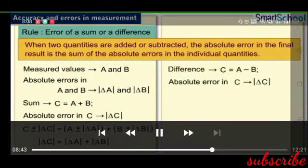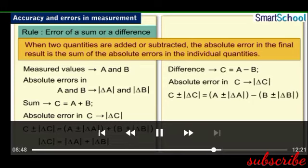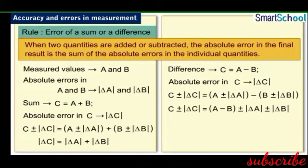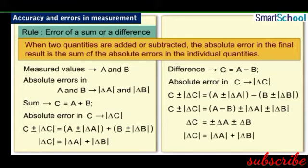For the difference, c = a − b: we have c ± Δc = (a ± Δa) − (b ± Δb) = (a − b) ± Δa ± Δb. Therefore, Δc = ±Δa ± Δb, and the maximum value of error ΔC is again ΔA + ΔB.